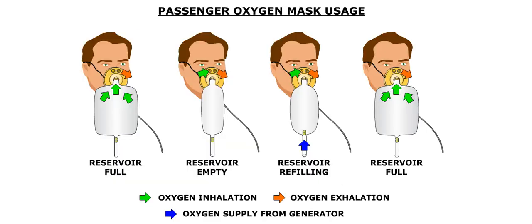The masks have a reservoir bag that fills up with oxygen continuously. During inhalation, oxygen flows into the mask until the bag is emptied, then cabin air is inhaled. During exhalation, oxygen stops flowing to the mask while the reservoir bag is refilled, and exhaled air goes out the mask vents. Each supply hose has a flow indicator for a visual check of oxygen flow.